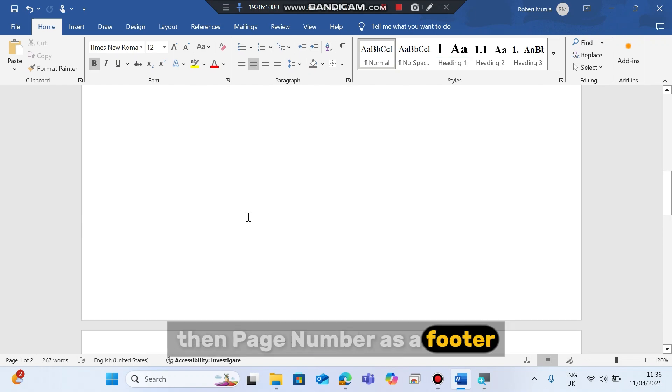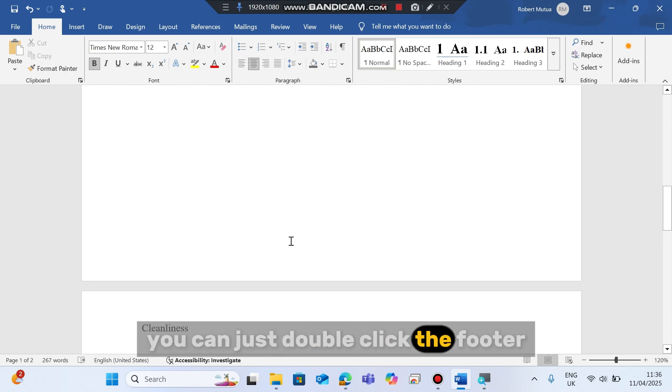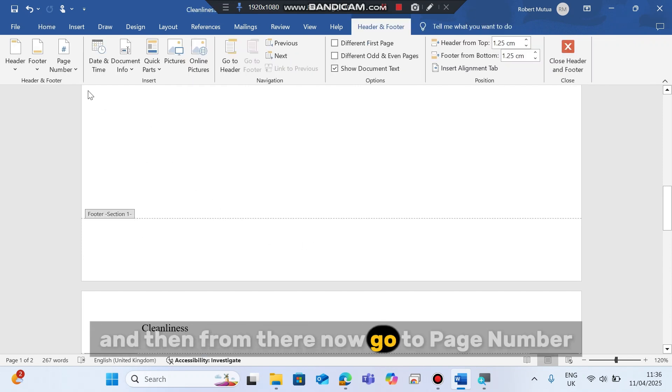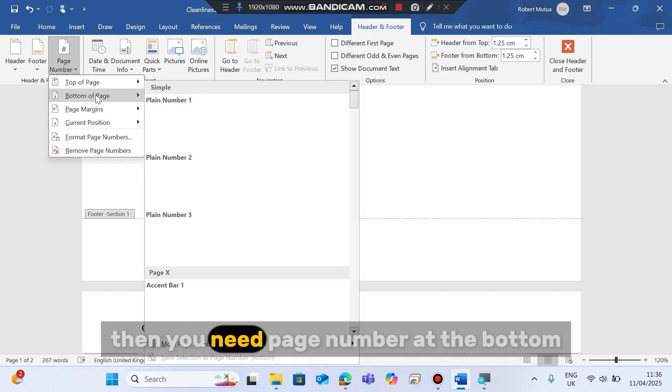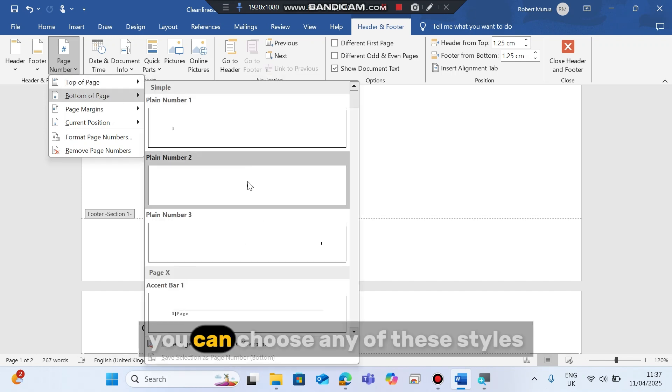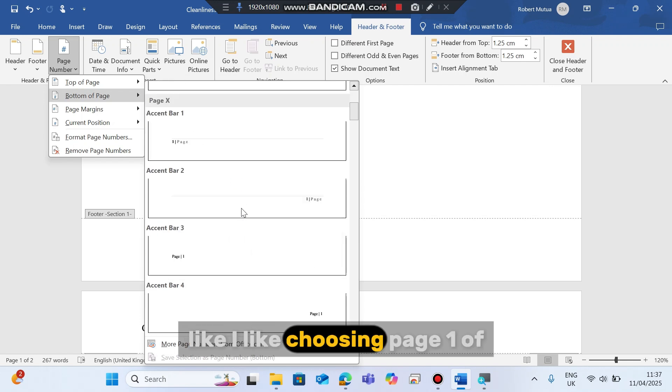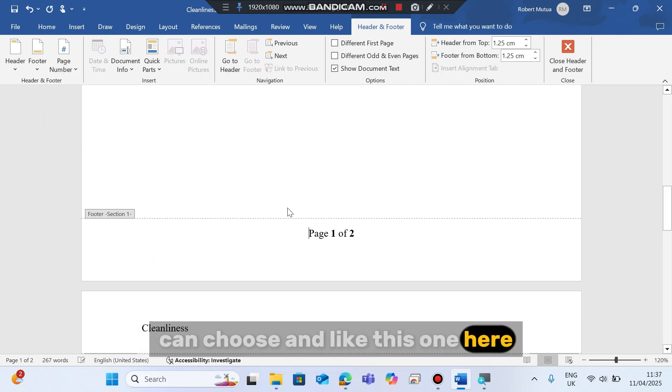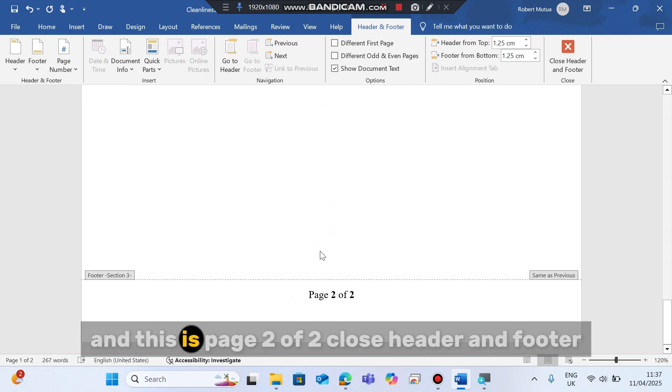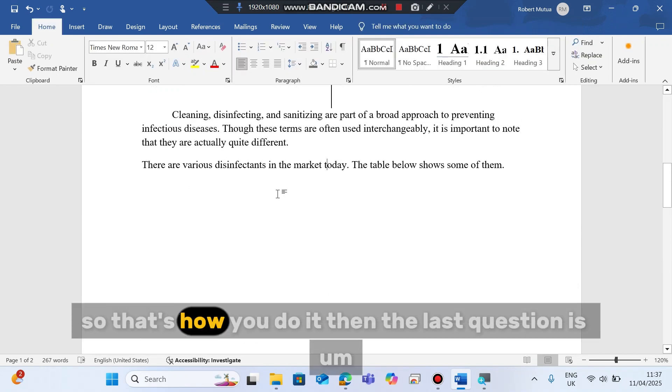Then page numbers as a footer. To insert a page number in a document, you can just double click the footer of any of the pages like this one. And then from there, now go to page number. Then you need page number at the bottom. You can choose any of these styles, not unless the exam has specified. I like choosing page one of. I'm choosing like this one here. And you see, this is page one of two, and this is page two of two. Close header and footer. So that's how you do it.